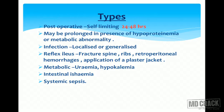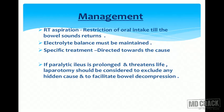Other causes of paralytic ileus include localized or generalized infection, reflex ileus seen in fractured spine or ribs, retroperitoneal hemorrhage, application of plaster jacket, metabolic causes such as uremia and hypokalemia, intestinal ischemia, and systemic sepsis. Management involves Ryle's tube aspiration, restriction of oral intake until bowel sounds return, electrolyte balance, and specific treatment directed at the cause. If prolonged and life-threatening, laparotomy should be considered.